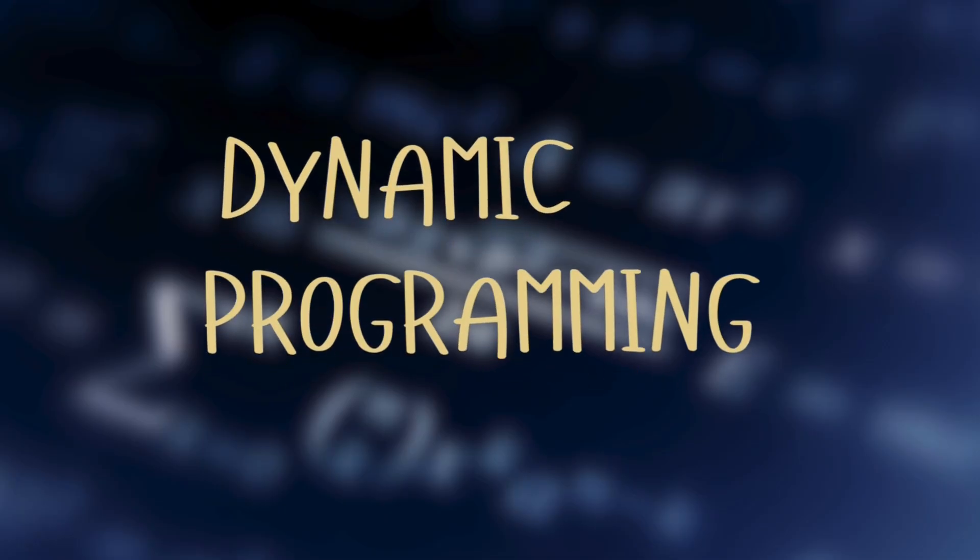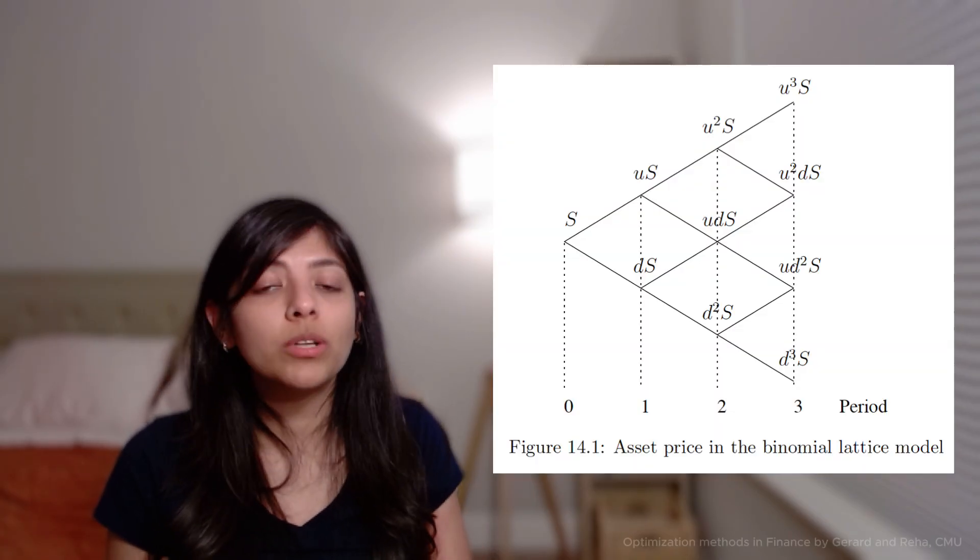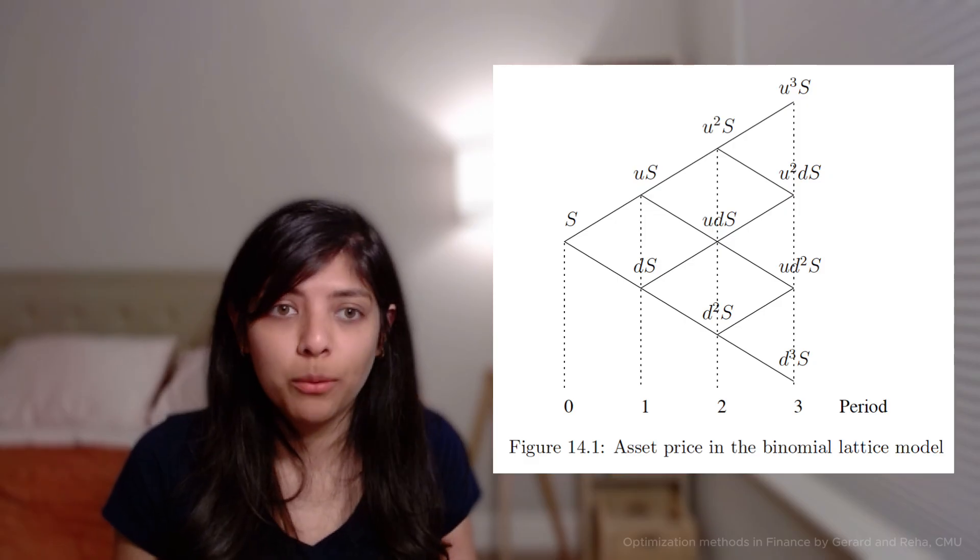Dynamic programming. What if you're making a series of decisions over time, not just one — like planning a trip with multiple stops? You want the best total plan, not just the best first move. Dynamic programming solves problems like this by working backward from the end. At every step, it looks ahead and asks: what's the best move now, given what happens later? This is great when your decisions depend on future steps.